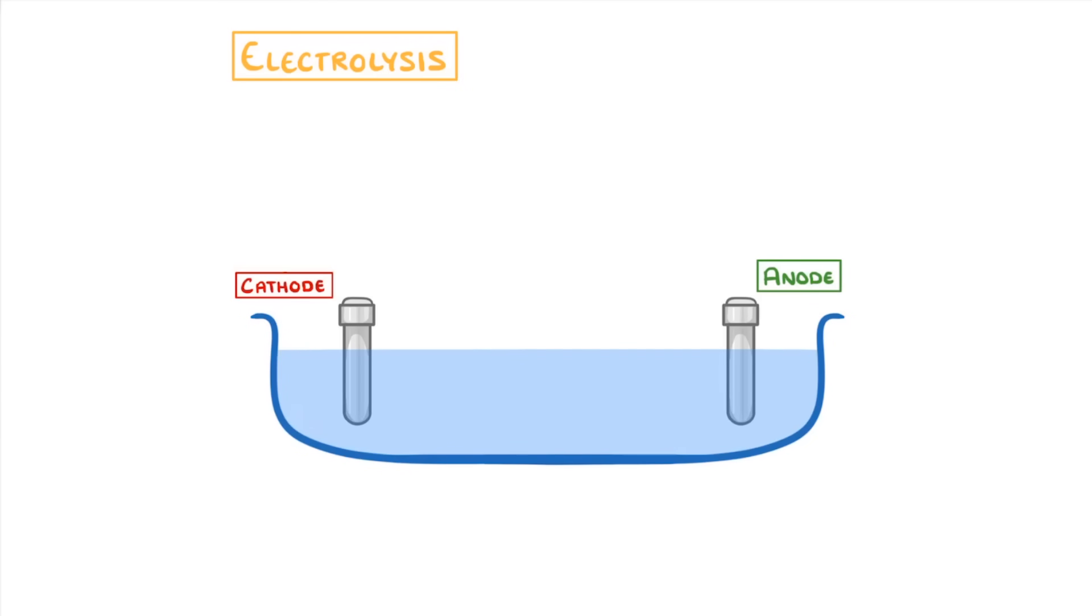Whenever you do an electrolysis experiment, you're going to need a beaker full of electrolyte, your two electrodes, with the positive anode on the right and the negative cathode on the left, a wire joining the two electrodes, and a power supply in the middle.